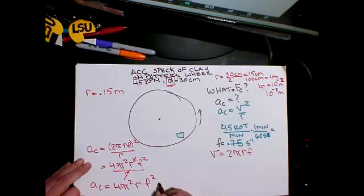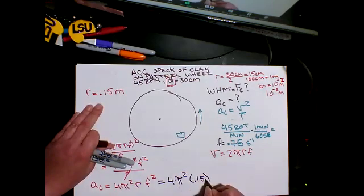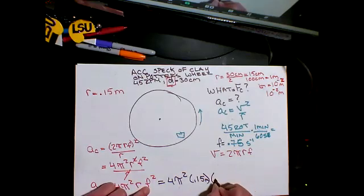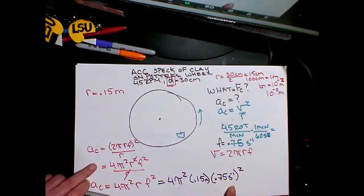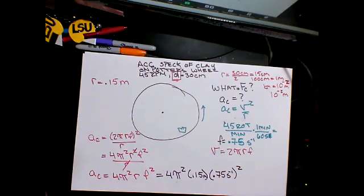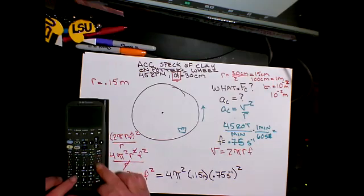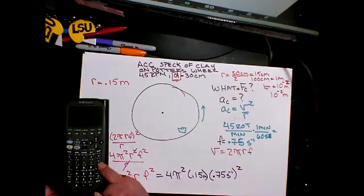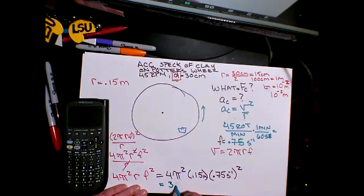Now we're ready to put in our values. 4π² times r, which is 0.15 meters, times frequency squared, which is 0.75 seconds to the negative 1 squared. One of my double-checks: let's see what units this gives me. Meters with seconds squared on the bottom gives me meters per second squared, which is acceleration. Good, we did it right. Unit analysis is really helpful. Four times π² times 0.15 times 0.75 squared gives me an acceleration of 3.33 meters per second squared.